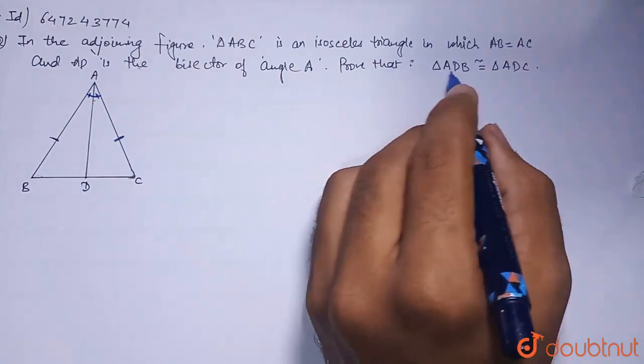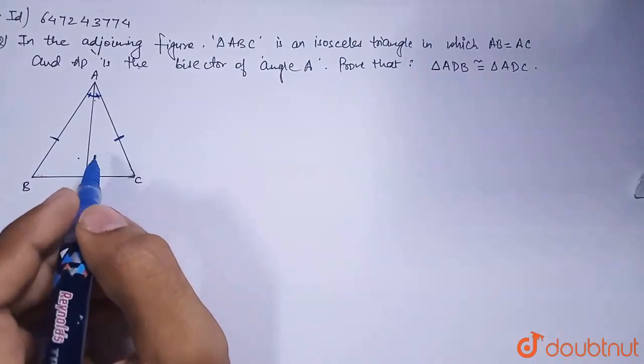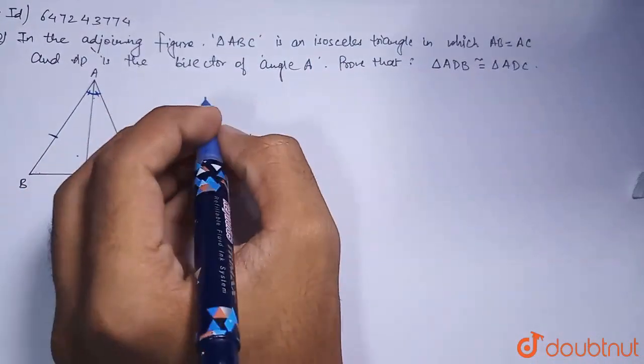Prove that triangle ADB is congruent to triangle ADC. We have to prove these two triangles. Let's do it.